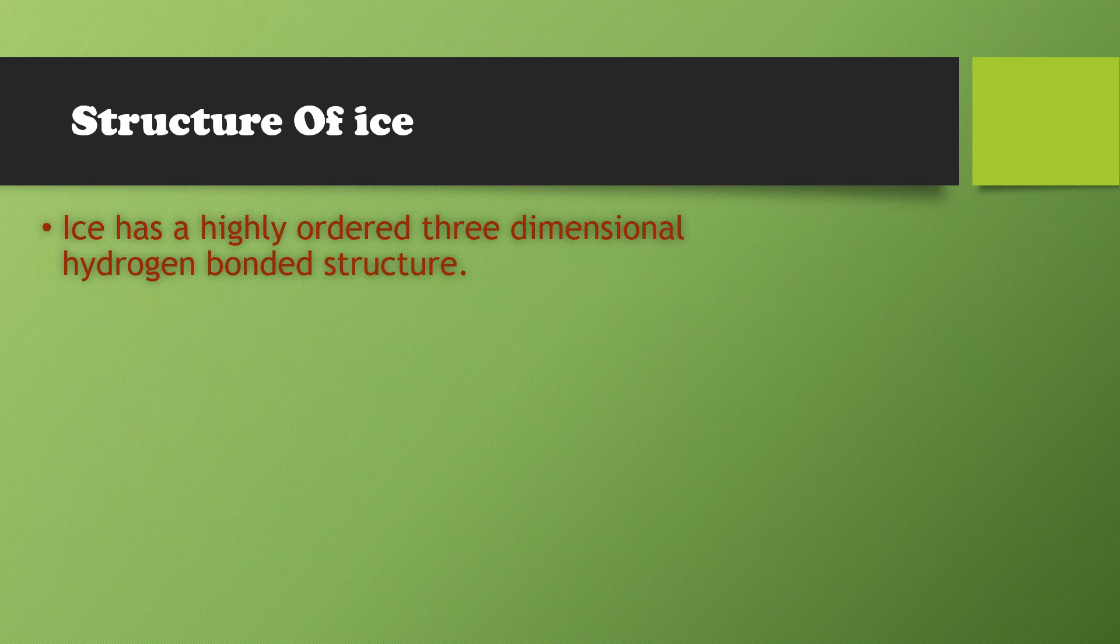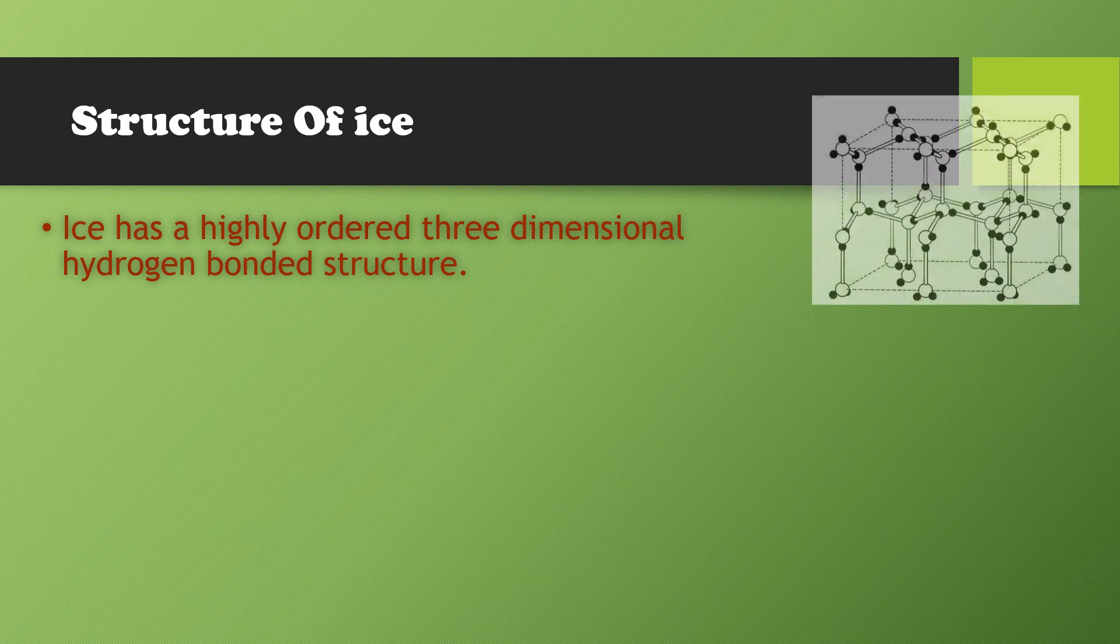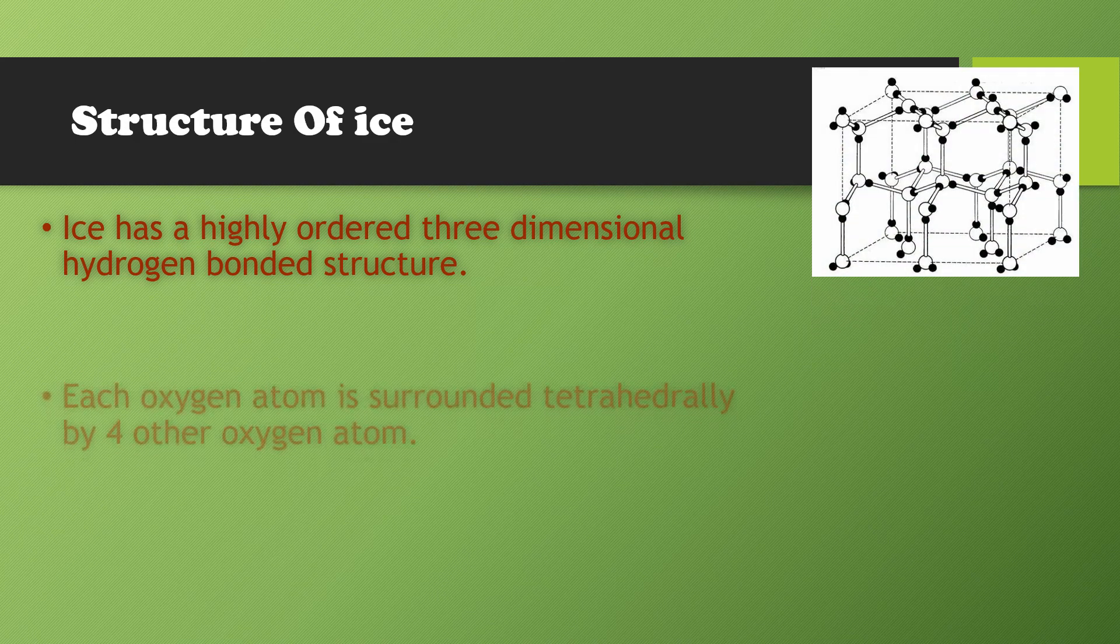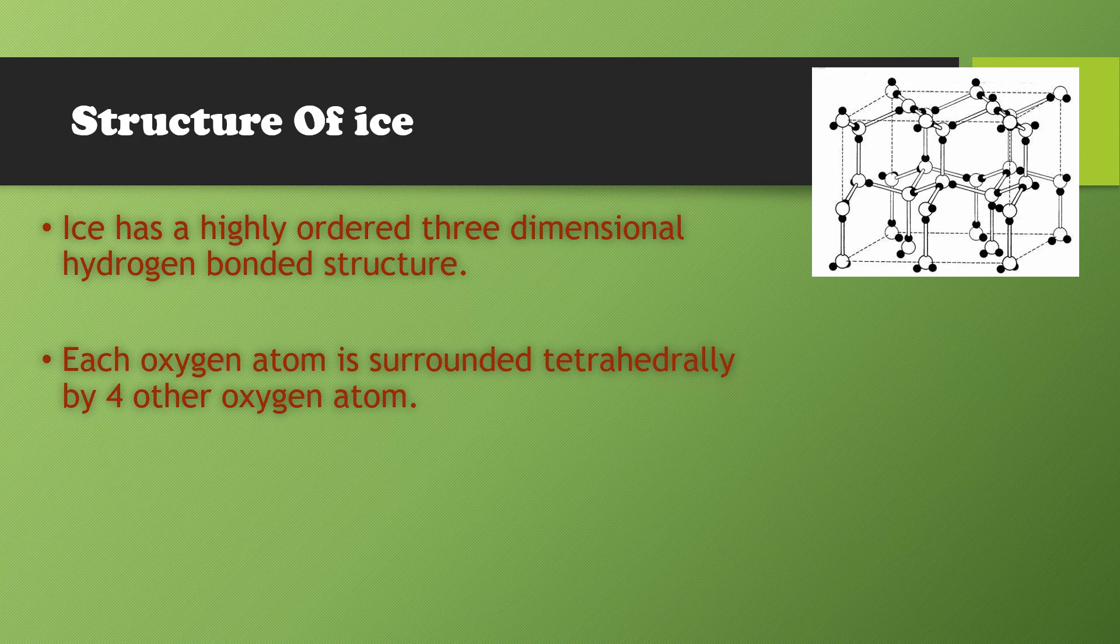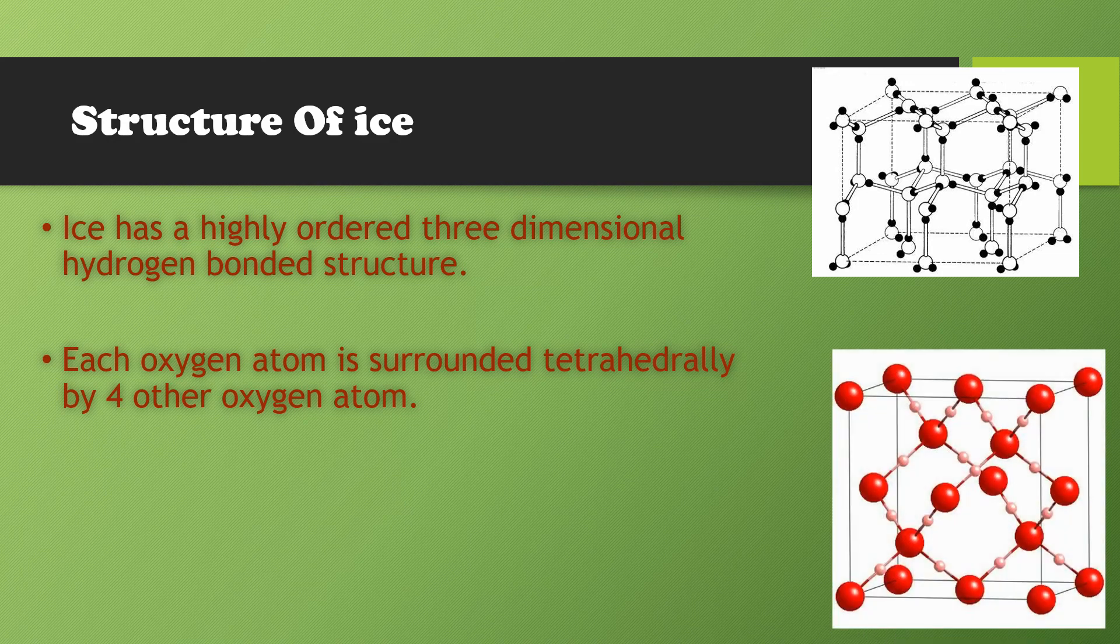Ice has a highly ordered three-dimensional hydrogen bonded structure in which oxygen atom is surrounded tetrahedrally by four other oxygen atoms at a distance of 276 picometer.